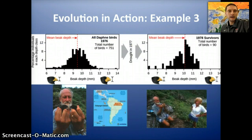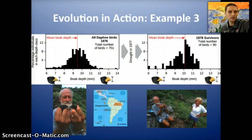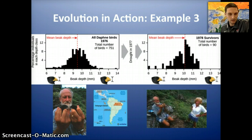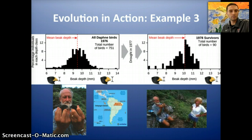A final example is found in the Galapagos Islands, and this involves two researchers — Peter and Rosemary Grant, a married couple — who have been going to the Galapagos Islands for over 30 years, measuring the beak size of different finches. In 1977, there was a major drought on Daphne Major, one of the islands in the Galapagos Archipelago, that caused a shortage of small seeds. What this left was larger seeds for birds to eat, and only birds that had larger beaks were actually able to crack the seeds and get nourishment in order to survive.